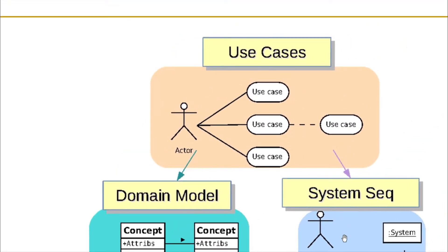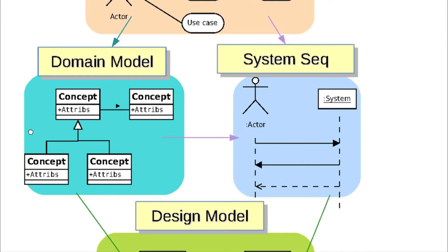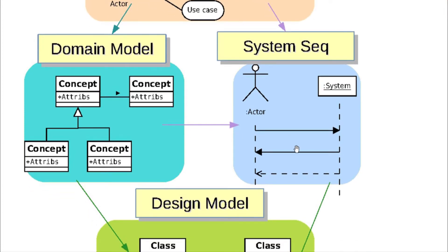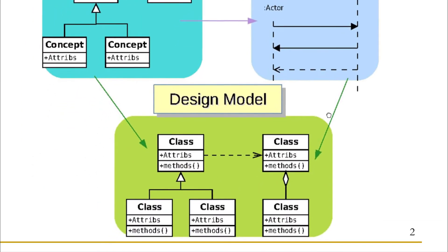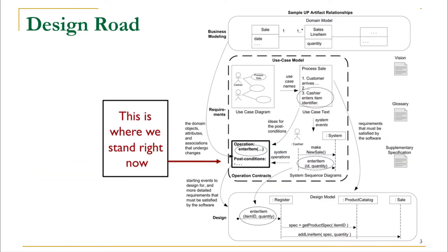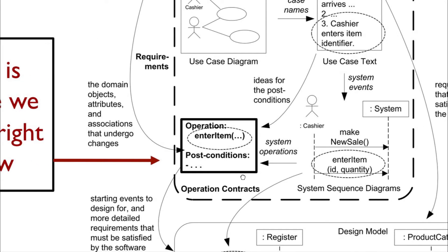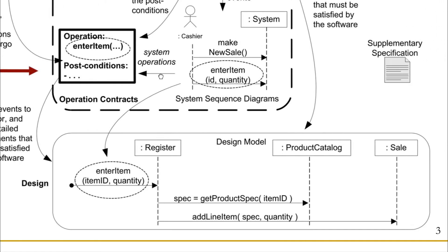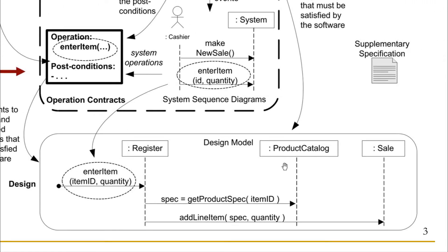We have already seen the use cases, we talked about the domain model and system sequence diagrams. The system sequence diagram including the domain model are going to be our input for the sequence diagrams, which will actually help us get started with our class diagrams. In the context of the unified process, this is where we are right now. Once we are done with the operation contracts — describing what they are, how we write them, and their pros and cons — we will jump into the design part and start with the sequence diagrams.